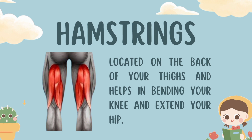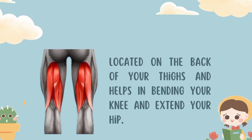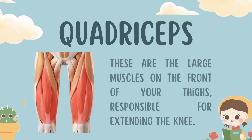Before ending this video, I'll explain the different functions of the muscle groups mentioned. First is the hamstrings, located on the back of our thighs, which plays a crucial role in bending or flexing the knee and extending the hip.